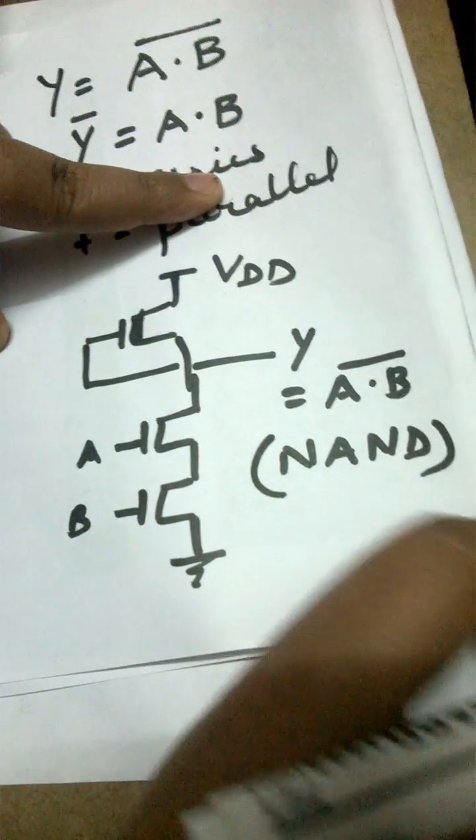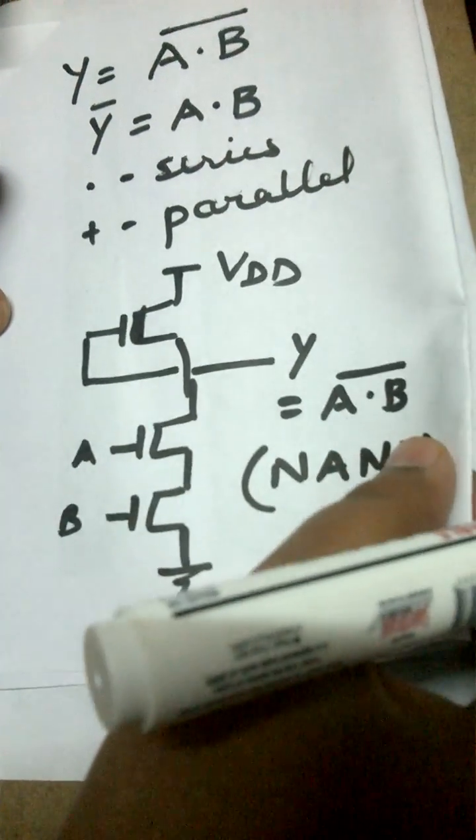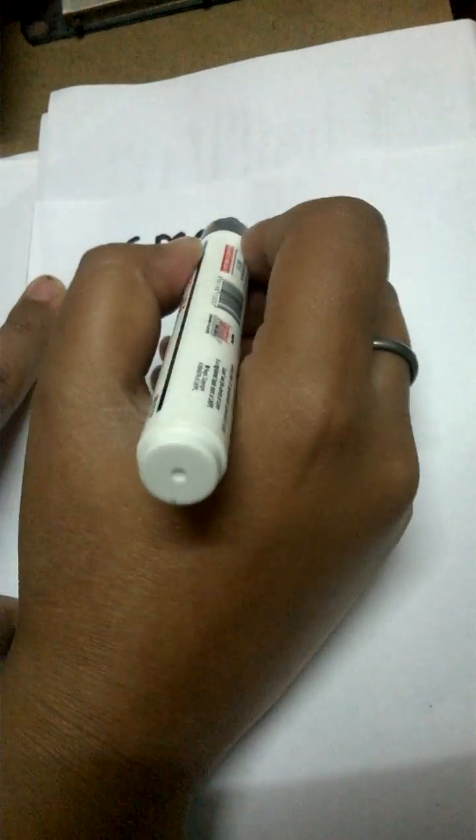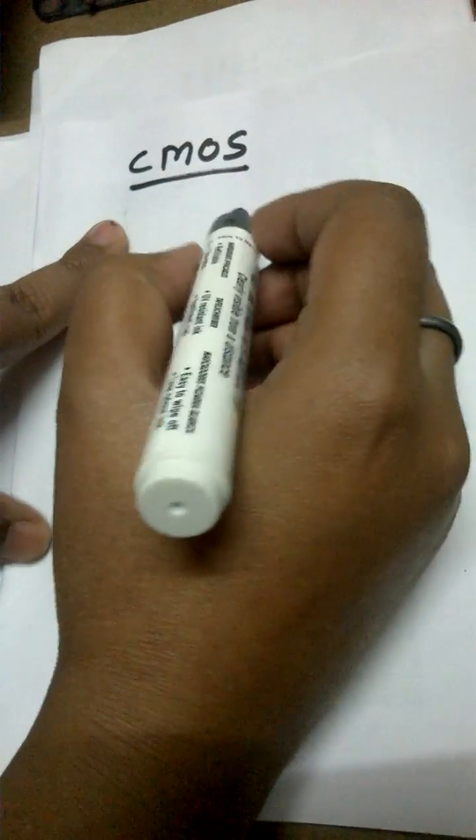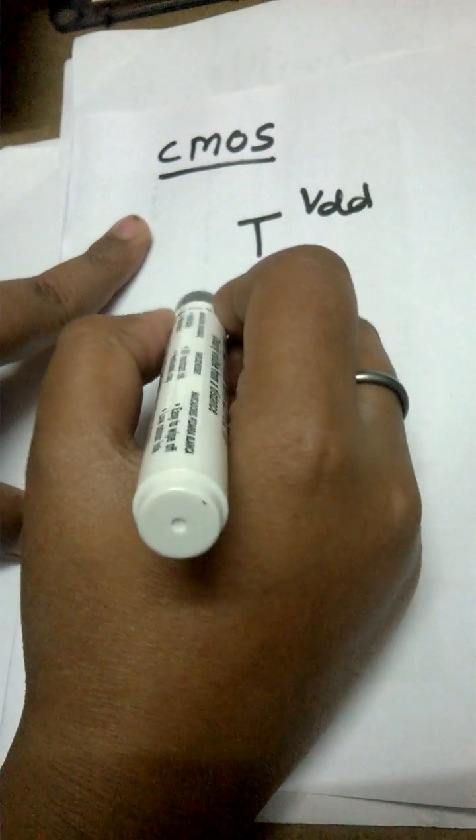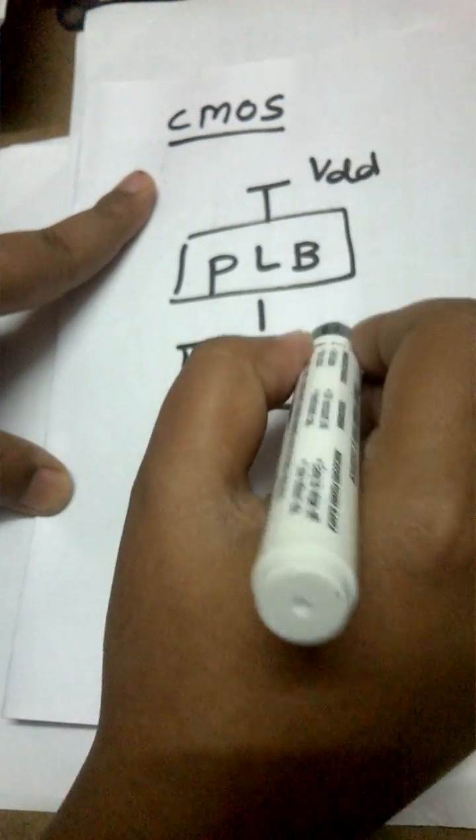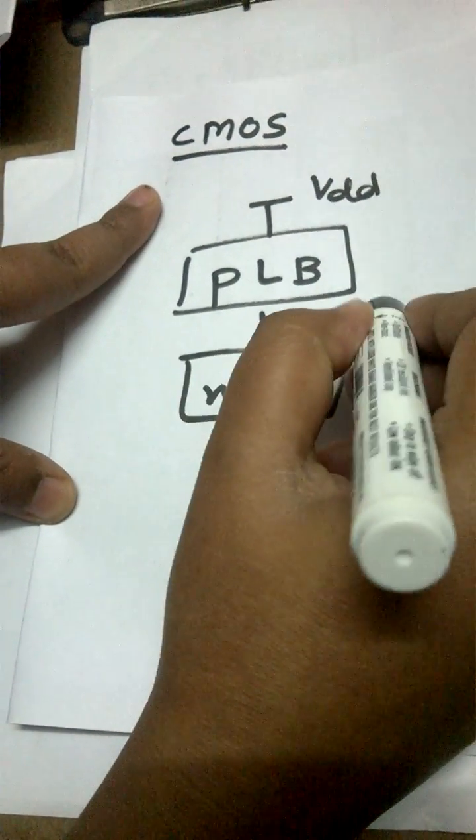Now let's take the second example, that is the CMOS. If I want to design a digital logic using CMOS, how will this be done? Let's see the basic diagram. For this we will have two blocks: P logic block and N logic block. We can take the output from here.